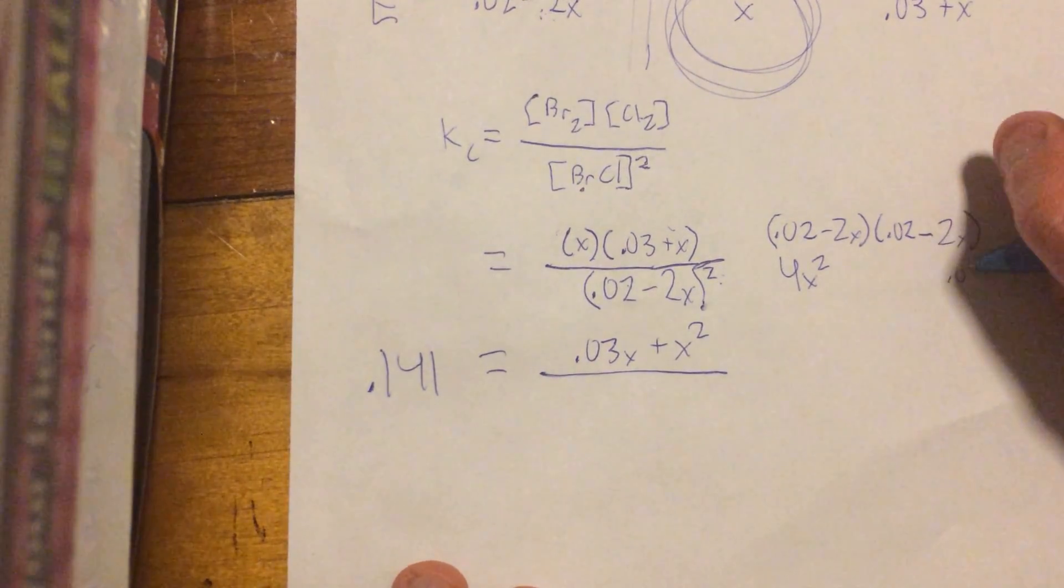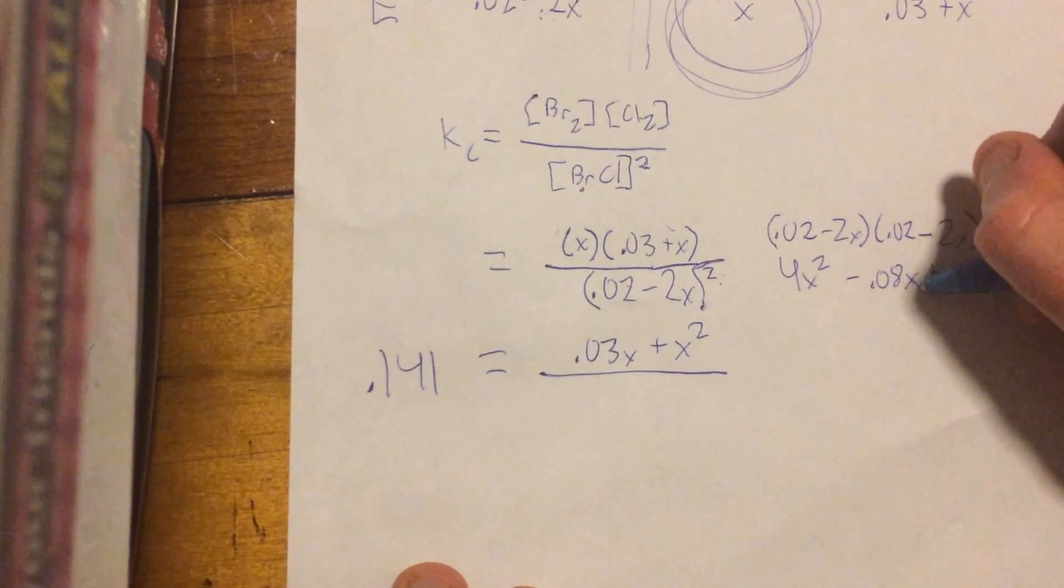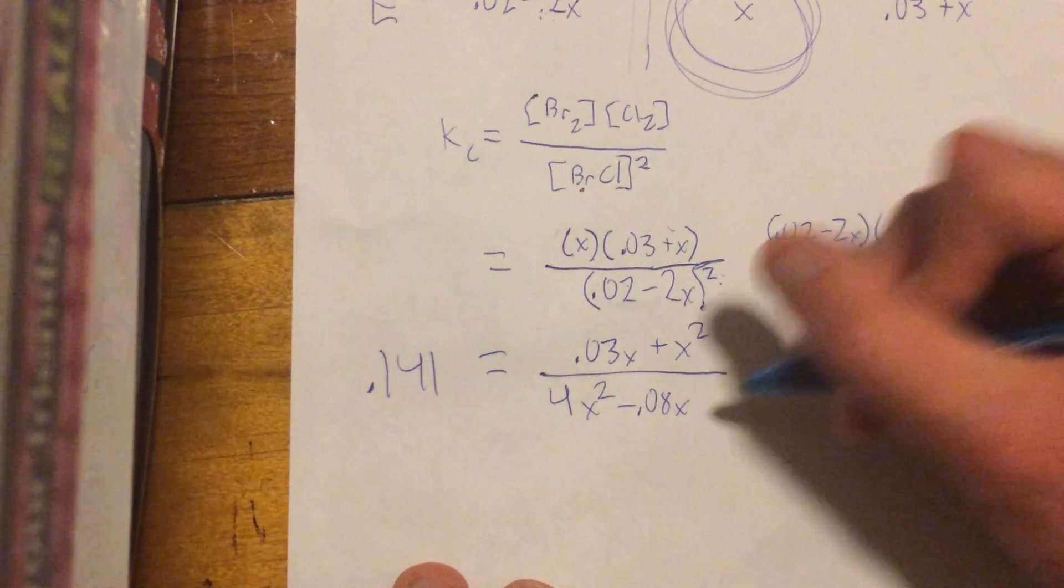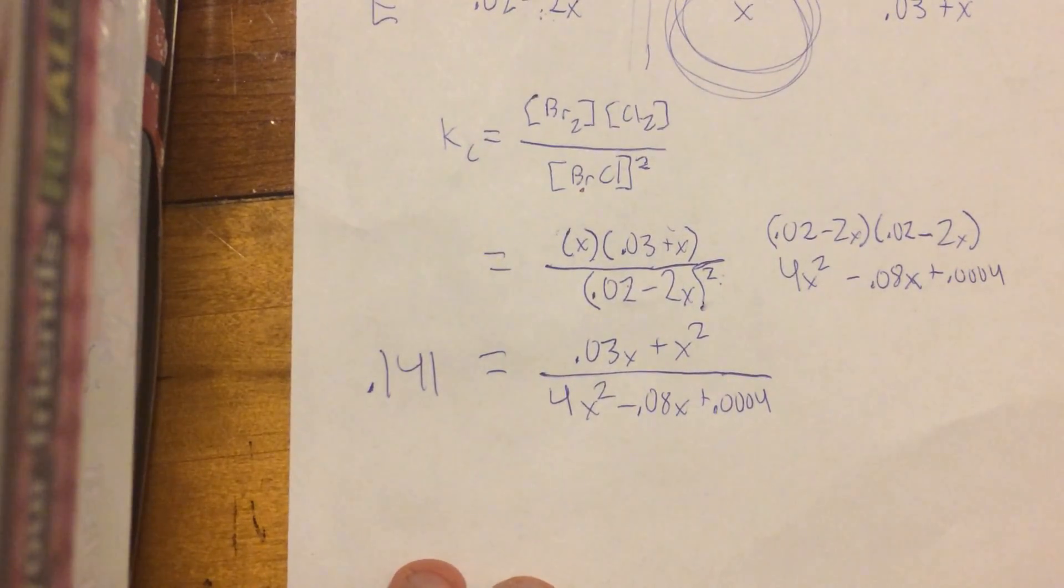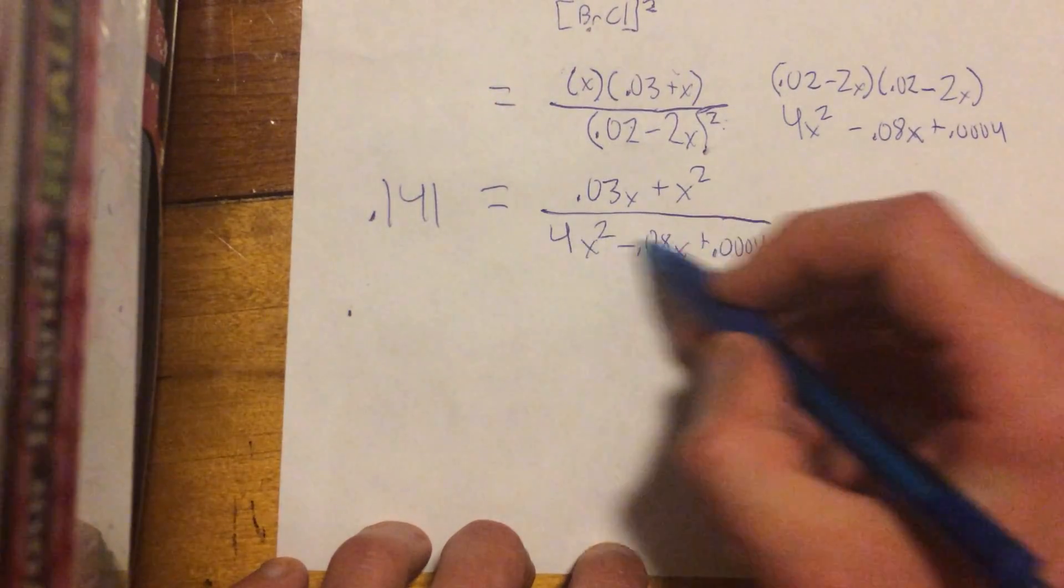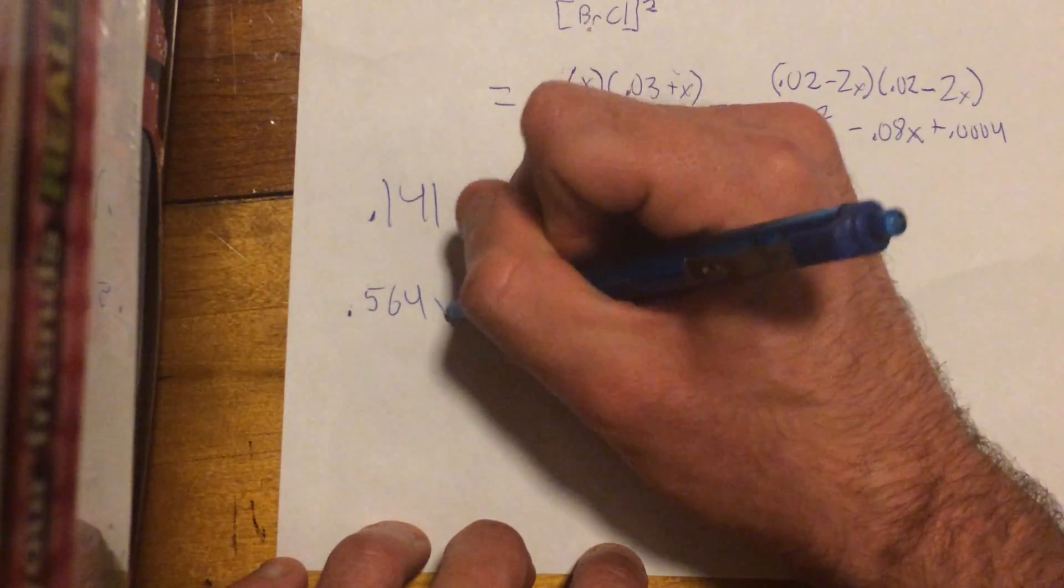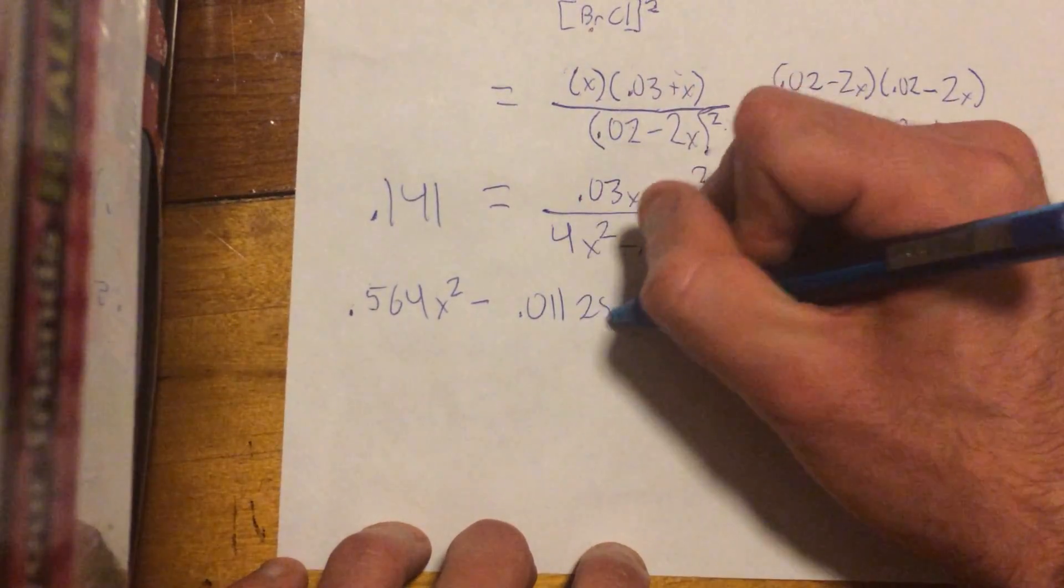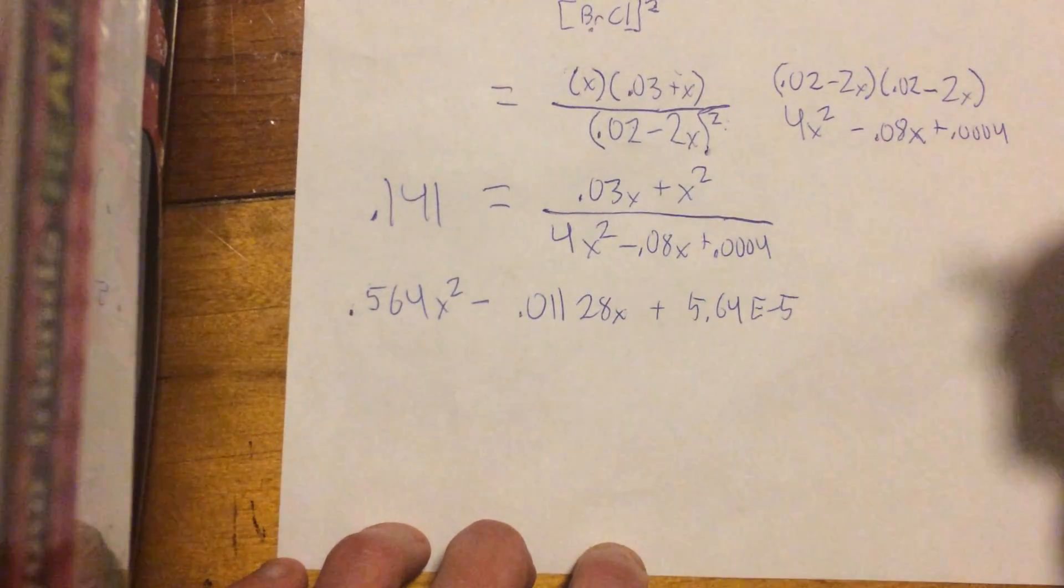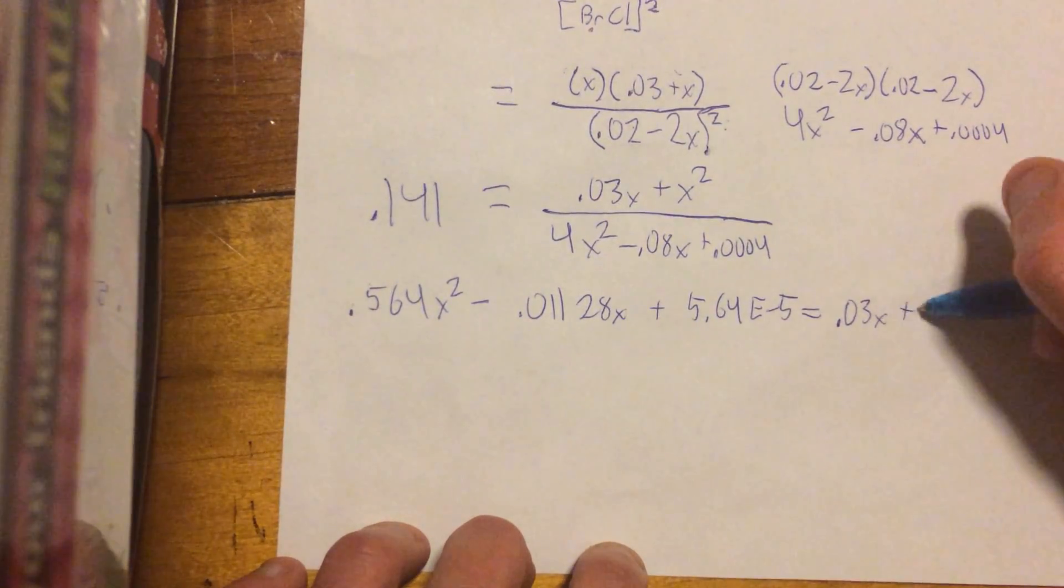0.004, positive, and then, negative 0.08x. All right, so that goes down to here, 4x squared minus 0.08x plus 0.0004. All right, so now we keep mathing it out, so that comes out to a point, we multiply the denominator here with this value over here, so 0.564x squared minus 0.0128x plus 5.64 times 10 to the negative 5. I like putting the e, because that's what I put in my calculator, equals the top that we have left over, 0.03x plus x squared.